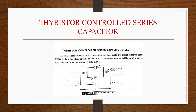What will be the advantages of FACTS controllers? It will provide secure and controllable tie line connections to neighboring utilities and regions, thereby decreasing overall generation reserve requirements on both sides. It is flexible and will have control of power flow in transmission corridors by controlling line impedance, angle, and voltage. It will prevent cascading outages by limiting the impacts of faults and equipment failures. By using FACTS devices, stability will be increased and optimum power flow for certain objectives and environmental benefits upgrade of lines. It will reduce loop flows and increase the loading capability of lines to their thermal capabilities, including short term and seasonal.